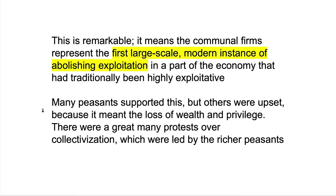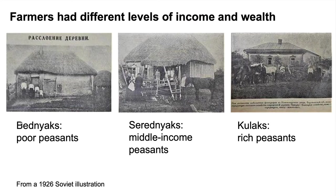The farmers had different levels of income and wealth. The Soviets broke them into three basic classes from a Soviet illustration of the 1920s: the Bednyaks — poor peasants with not very much; the Serednyaks — middle-income peasants who have a bit more, maybe a horse and a slightly bigger house; and the Kulaks — the rich peasants, many of whom were also small capitalists, who have a much better house and more resources.